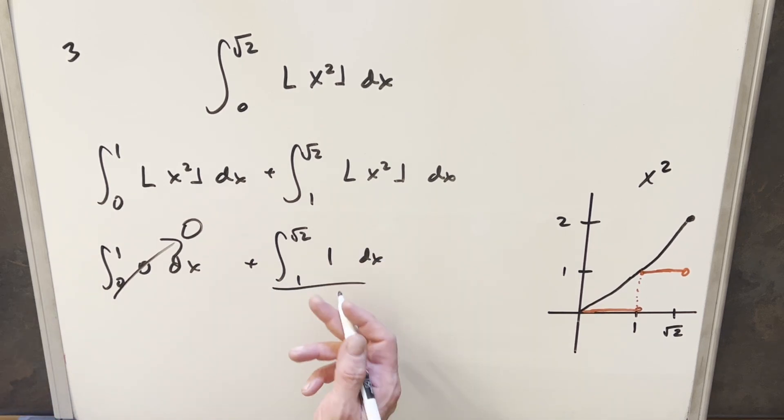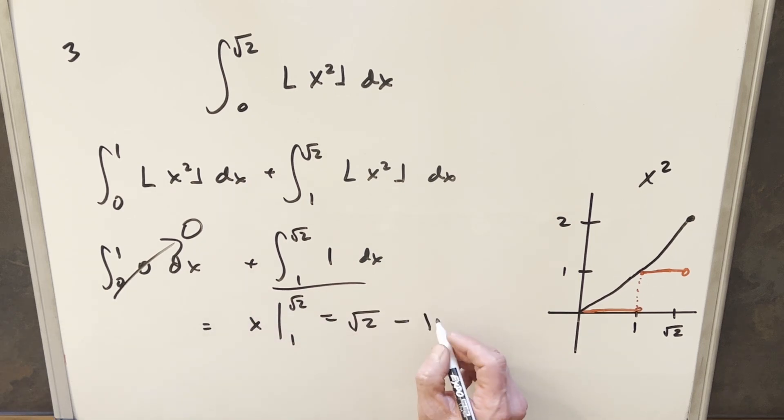So to finish this off, it's going to be real easy because we're integrating 1. So we integrate this, and we just get x evaluated from 1 to square root of 2. Evaluating this, we're going to get square root of 2 minus 1, and that's it.